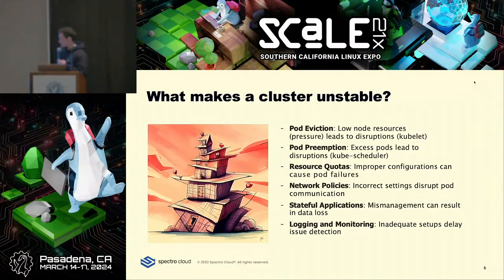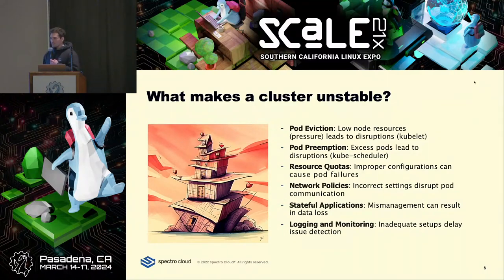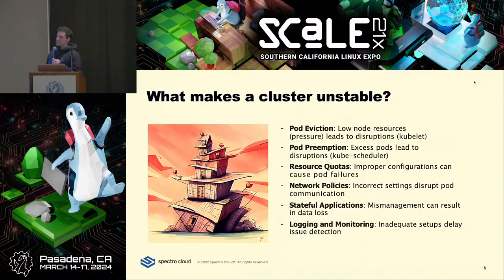There's a bunch of different stuff in the cluster you can configure to impact the decisions made by the kubelet and scheduler during a resource crunch. Understanding priorities and priority classes is a good place to start. By default, everything receives the same priority, but you can assign a priority class name to any pod and associate that to an integer-valued priority, segregating workload by importance.